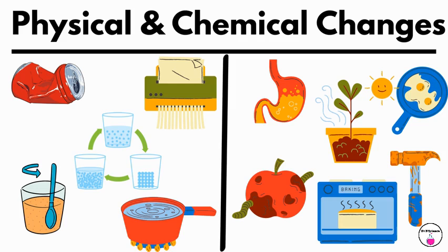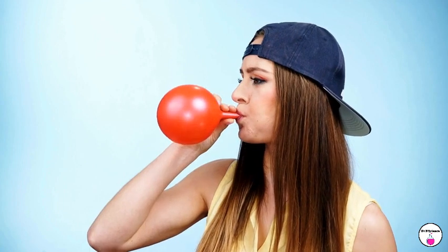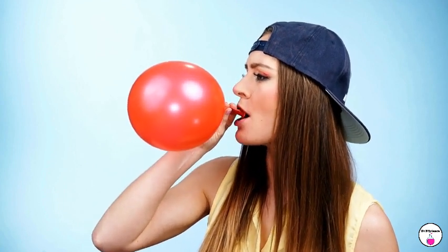Physical and Chemical Changes. A physical change refers to a transformation in the appearance or state of matter without altering its chemical composition. In other words, the substance remains the same at the molecular level, even though its physical properties may change. Physical changes are usually reversible.